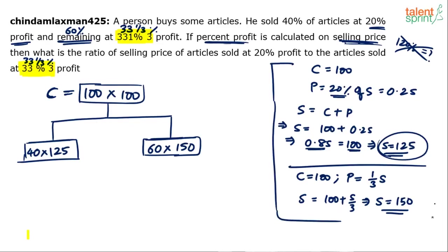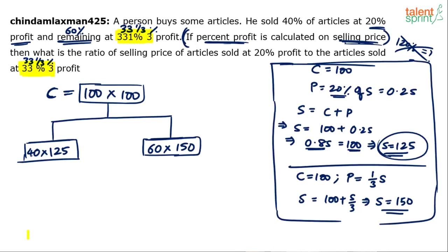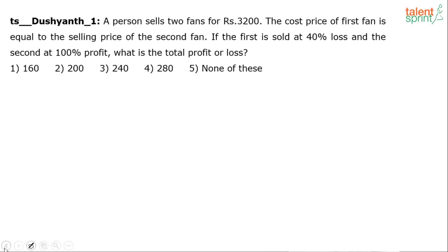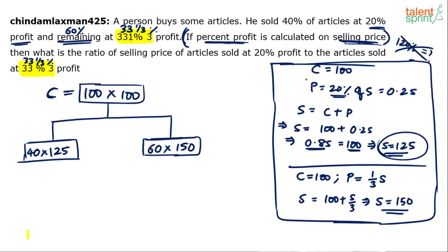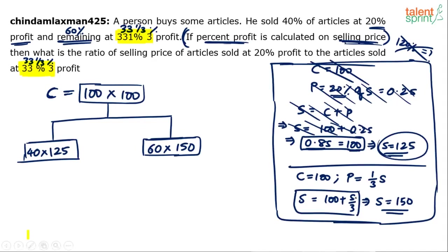The challenge in this question is finding the selling price correctly when profit is on selling price. If that statement weren't given, it would be a very simple question: 120 and 133.33. For the exam, don't write every step — directly visualize that 0.8S = 100 in the first case, and S − S/3 = 100 in the second. Remember, 100 here is quantity times price — quantity multiplied by price — quantity is also important.